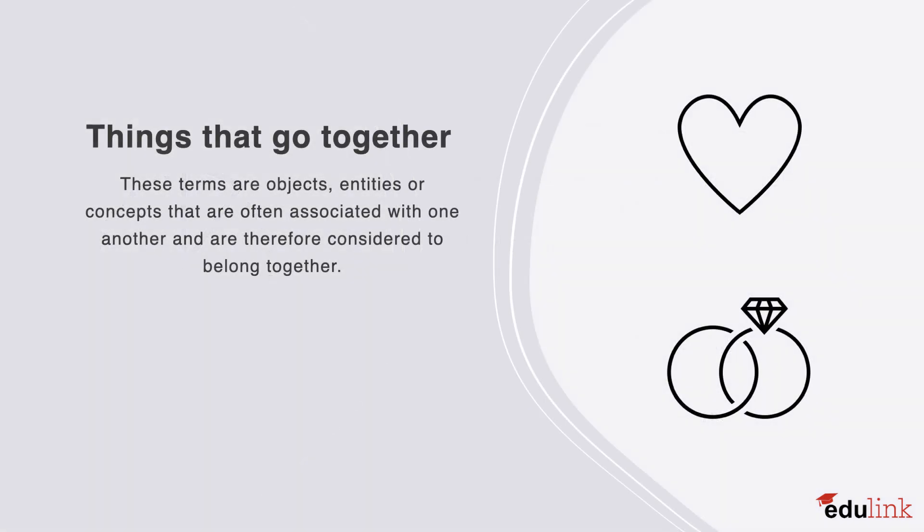The next type, things that go together. These are terms that are often co-located with one another. Or in simpler terms, they're often in association. And therefore, they can be considered to belong together. For example, belt and pants. Fire and smoke. Love and wedding. With one, one might expect the other.